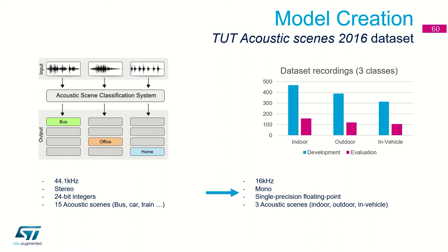For the learning dataset, we will use the public DCASE dataset collected by Helsinki University. It is 20 gigabytes of raw data composed of 30-second-long atomic recordings covering a bigger number of acoustic scenes. Since our microcontroller is limited in computational power, we decided to decrease the number of acoustic scenes down to three classes — indoor, outdoor, in-vehicle — and also decrease the sampling rate from 44.1 kHz down to 16 kHz, recording mode from stereo to mono, and accuracy from 30–24-bit integers to single-precision floating point.